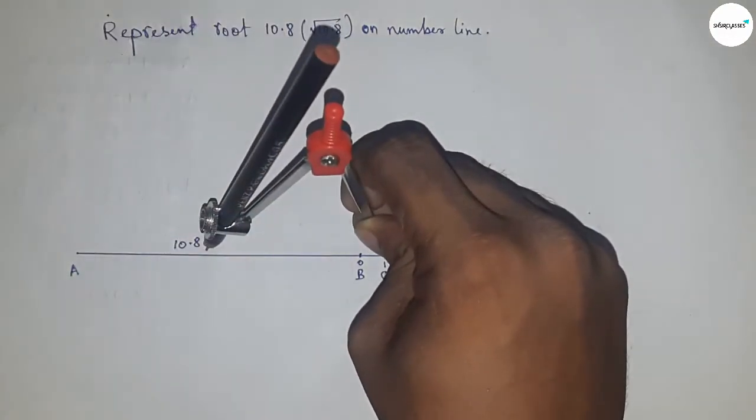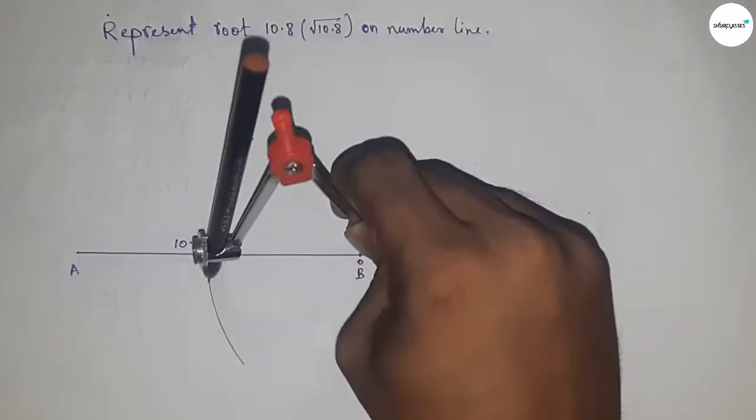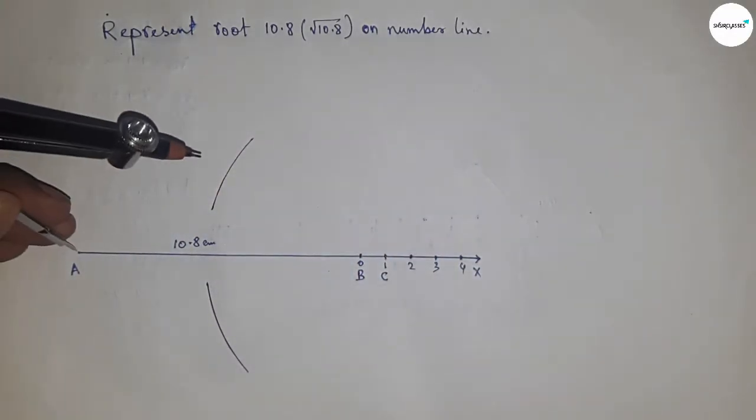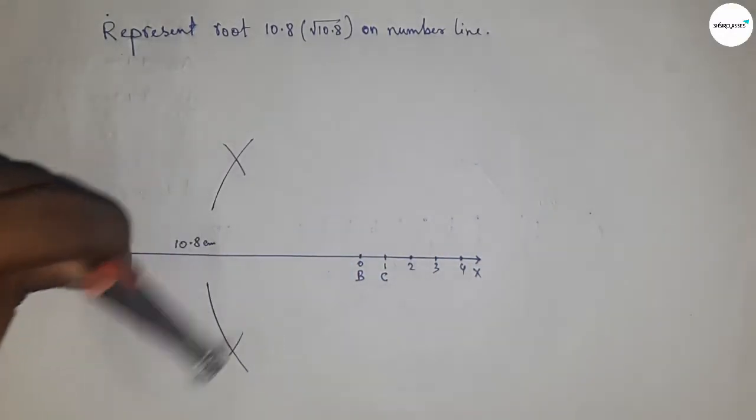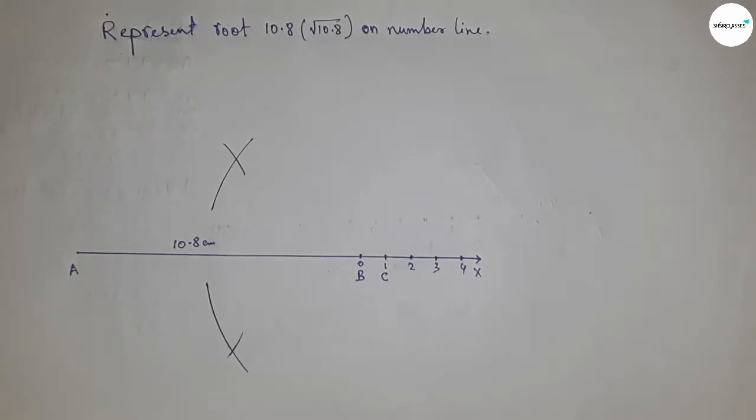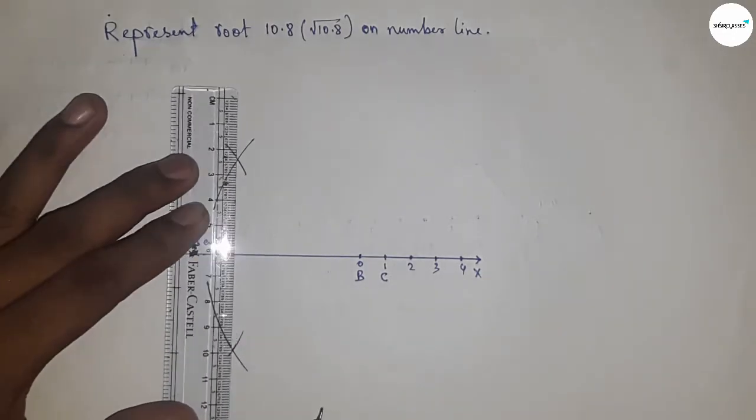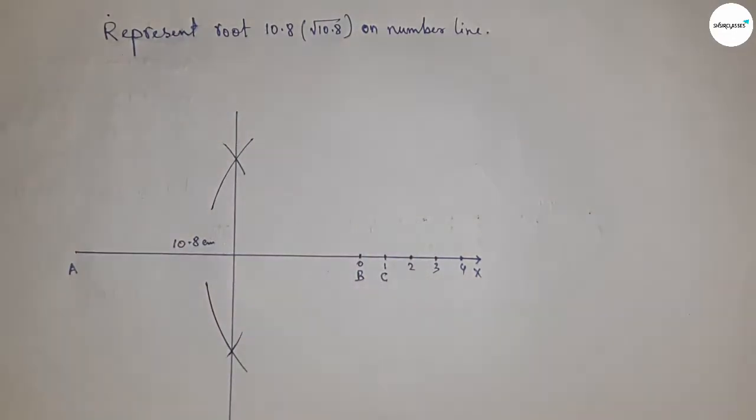Drawing arcs by this way with same length, putting the compass here and cut here and cut here. Now joining this which meet at a point O.